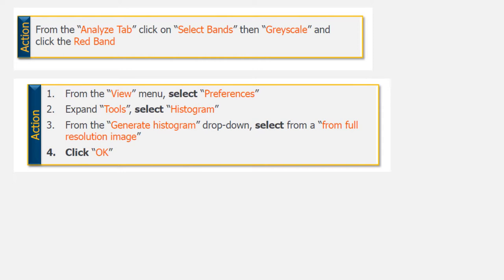Here's the setup you want: blue in band 1, green in band 2, red in band 3. Now from that same Analyze tab, go to Select Bands and find the grayscale function, click on the red band, and look at the red band in grayscale. Then go back up to the View menu, find Preferences, select the Tools section, select Histogram, generate histogram from a full resolution image, and click OK.